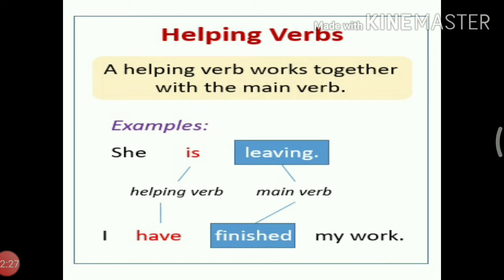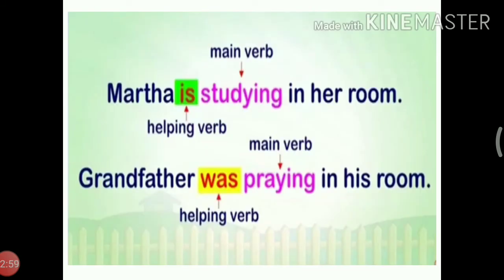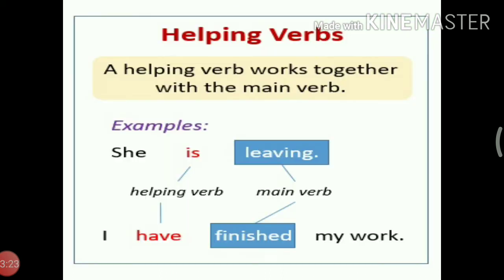Number 3: Helping verbs. A helping verb works together with the main verb. Examples: She is leaving. I have finished my work. The words is and have are helping verbs. They are helping the main verbs leaving and finished to complete the sentence. Look, children — Martha is studying in her room. Grandfather was praying in his room. As you can see, a helping verb always comes before a main verb that ends with -ing or -ed.